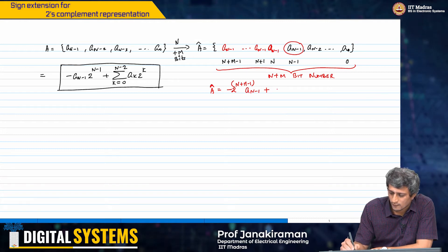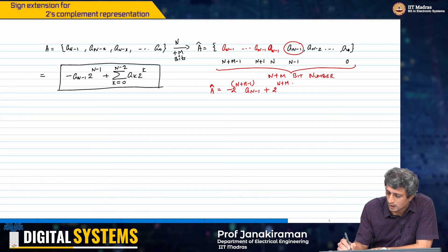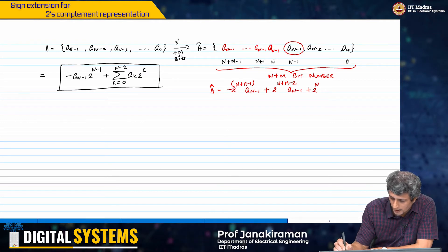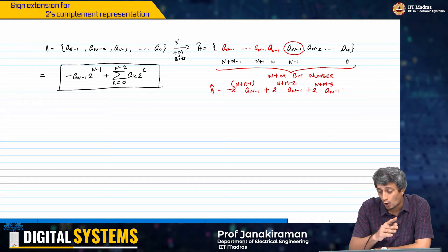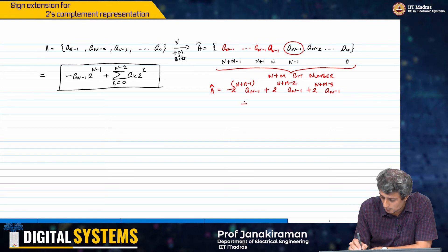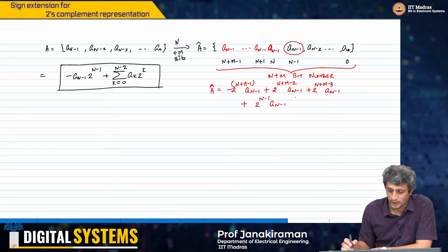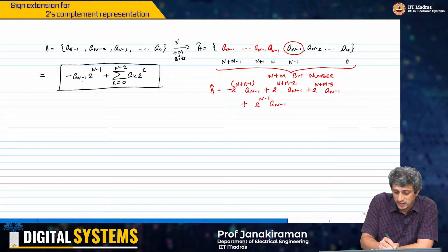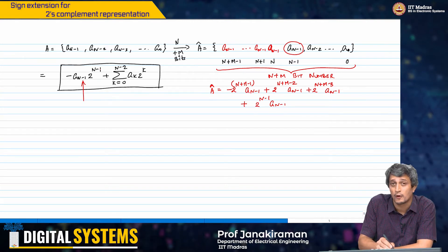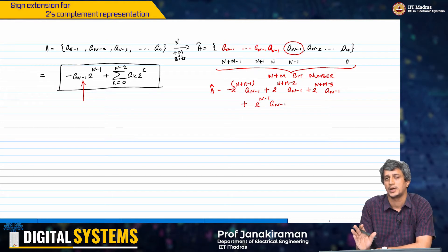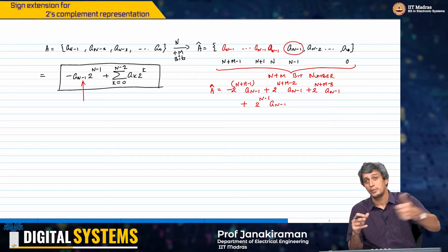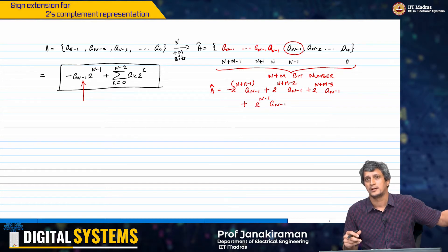Plus 2^(n+m-2) times A_(n-1) plus 2^(n+m-3) times A_(n-1) — remember, all these are the same bits — all the way to 2^(n-1). Remember, in the first representation the negative sign appeared against the 2^(n-1) term, but that is not the sign bit now. The sign bit has moved to the n plus m-th position.